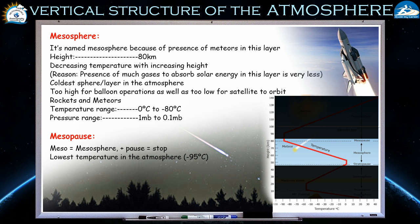The temperature range of the mesosphere is 0 degrees to minus 80 degrees centigrade, and the pressure range is 1 mb to 0.1 mb. The mesopause is the ending of the mesosphere, where the lowest temperature in the atmosphere — about minus 95 degrees centigrade — is recorded. So if someone asks the exact location of the lowest atmospheric temperature, the answer is the mesopause.